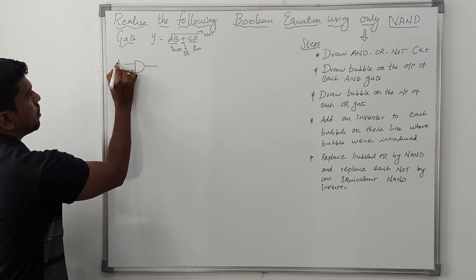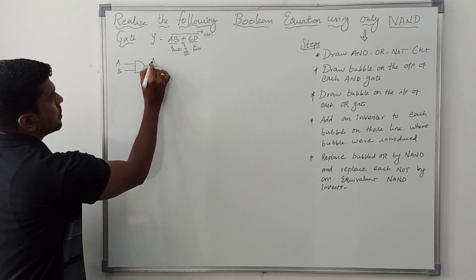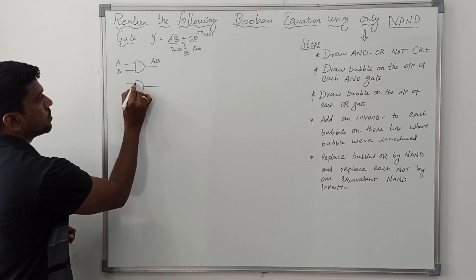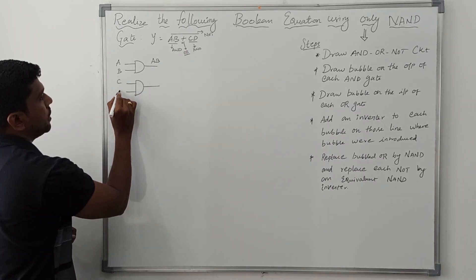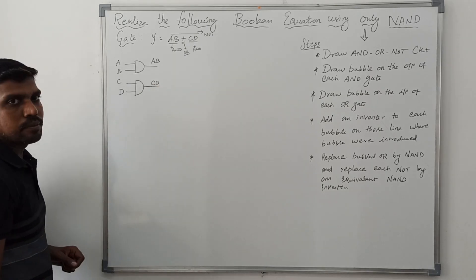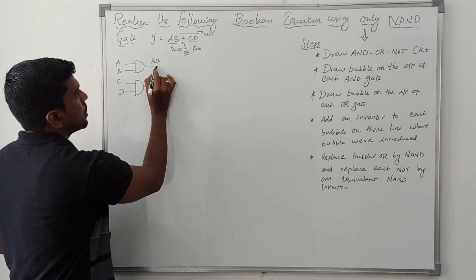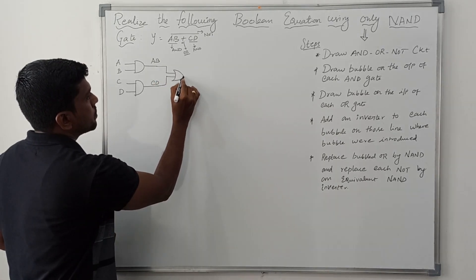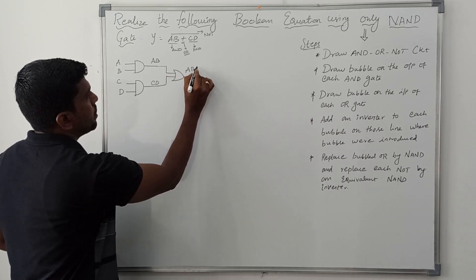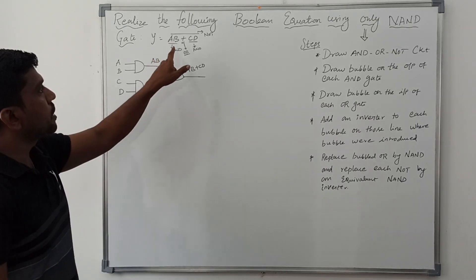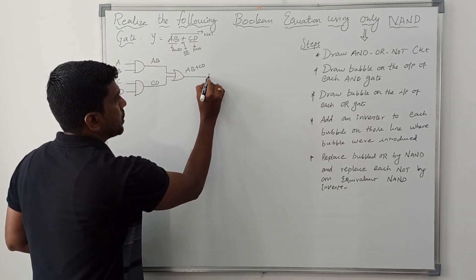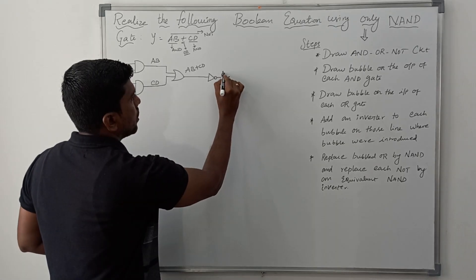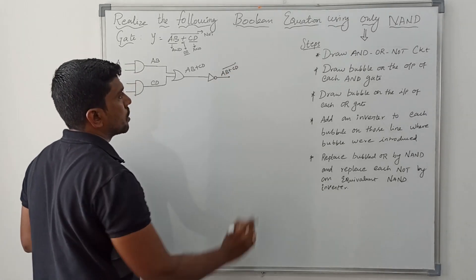The first AND gate has inputs A and B, and the output is A·B. The second AND gate has inputs C and D, and the output is C·D. Then we add these two product terms using one OR gate, giving AB + CD. To take the complement, we use an inverter. The final result is (AB + CD)'. So the first step is done.